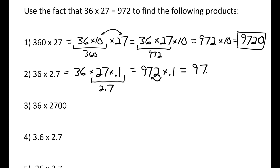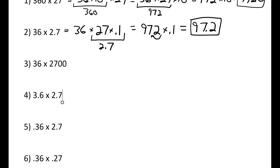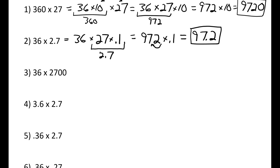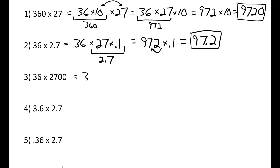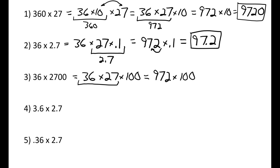Number three: 36 times 2,700. I can rewrite this as 36 times 27 times 100. Now that I have 36 times 27 in my expression, I know that equals 972. And if I multiply that times 100, I'm just moving my decimal point two places to the right, which gives me 97,200.